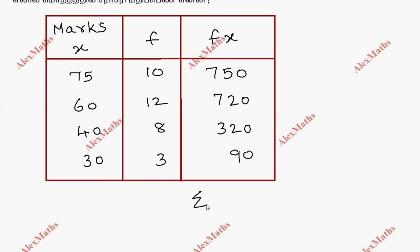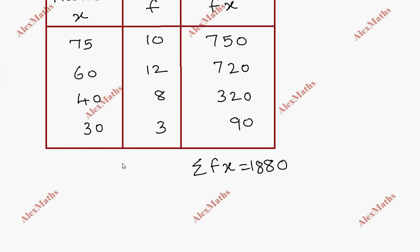Now add f times x. Sigma fx. 750, 1472, 1792, 1882. Sigma f is 10, 22, 30, 33.